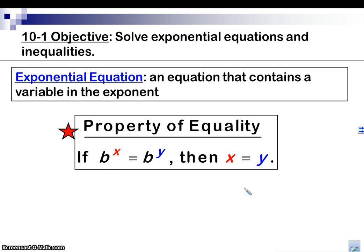That should make sense to you, right? If I have 2 to the 1, I'll just write this down here. If I have 2 to the 1 power, and that's equal to 2 to the x power, then x has got to be 1.